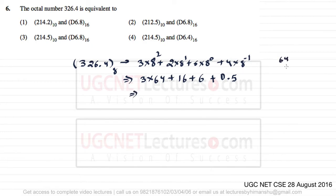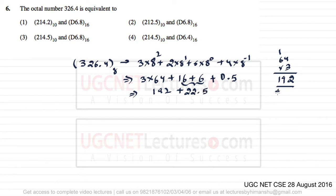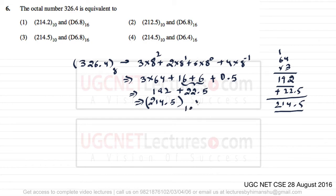3 into 64 equals 192, plus 16, plus 6 gives 22, and 22 plus 0.5 is 22.5. Adding 192 plus 22.5 gives us 214.5. So the decimal value of 326.4 in base 8 is 214.5 in base 10.